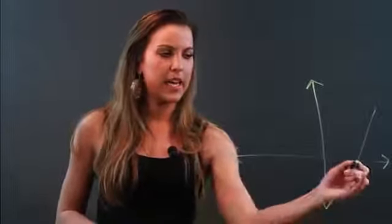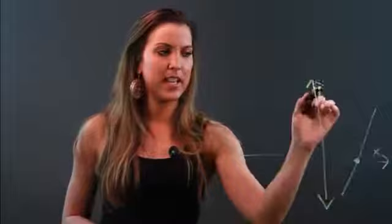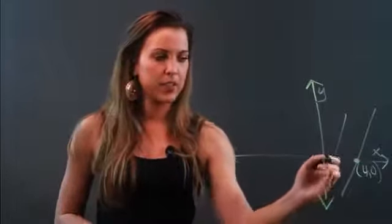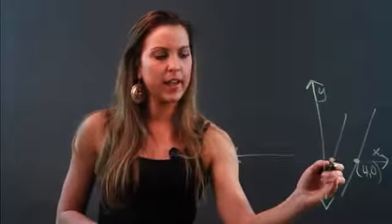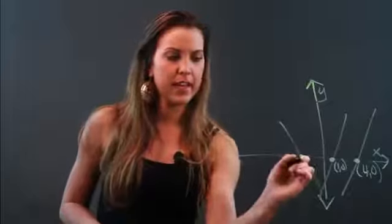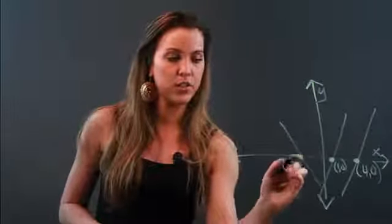So here's an example of a function and here's its x-intercept because that's where it hits the x-axis. At that point, we're going to estimate that point to be 4, 0. Here's another function. It hits the x-axis right here. I can estimate that point to be 1, 0. Here's another function. That x-intercept might be negative 2, 0.